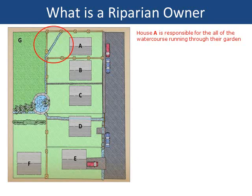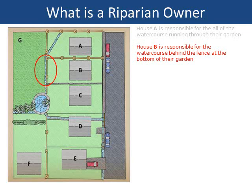House A is responsible for all of the watercourse running through their garden. House B is responsible for the watercourse behind the fence at the bottom of their garden. The ditch is running outside the property.